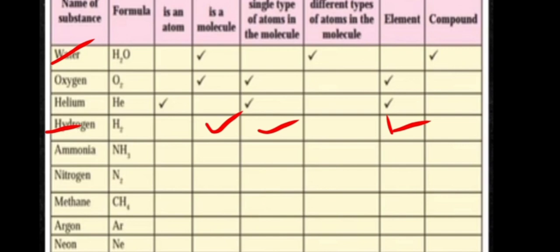Now let's see ammonia. The formula for ammonia is NH3. The first question is whether it is an atom or a molecule. Since we have N and H — two different types of atoms — it is a molecule. For the single type of atom column, we have two types of atoms, so leave it blank and tick the different type column. Since two different atoms are combined together, it is a compound. The remaining entries you will fill on your own and put in the comment section.